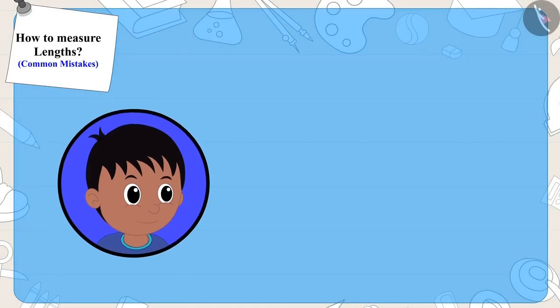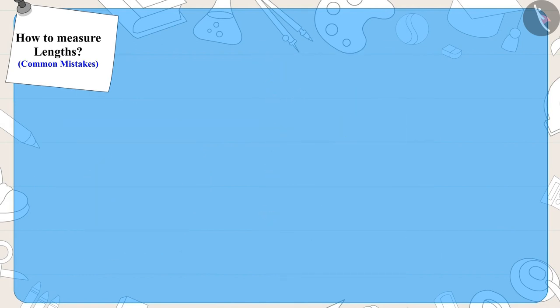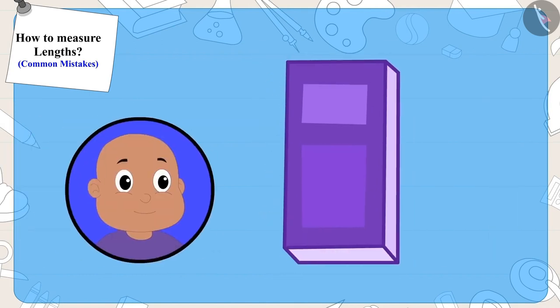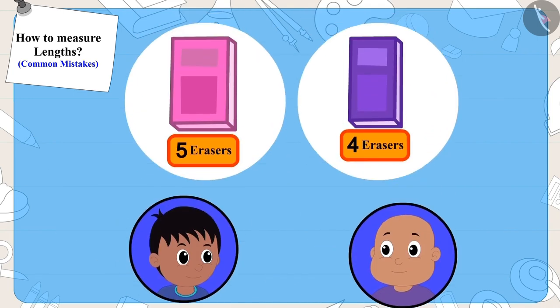Raju had measured his notebook placing the eraser from one end correctly. But while measuring his notebook, Bablu placed the eraser a little above the bottom end. That is why the length of his notebook was four erasers long instead of five erasers long.